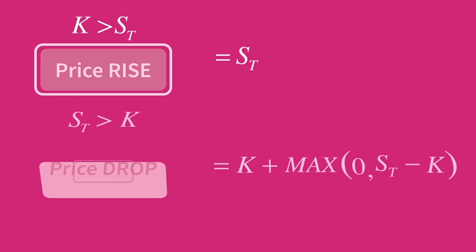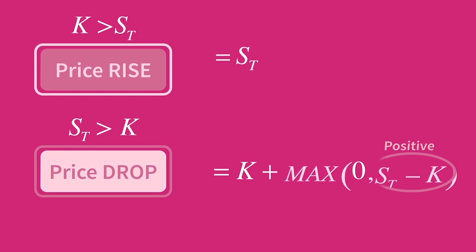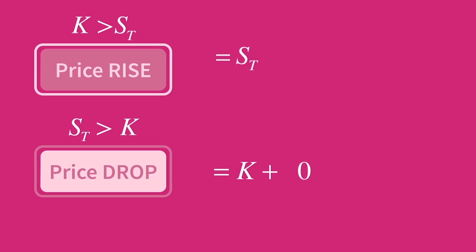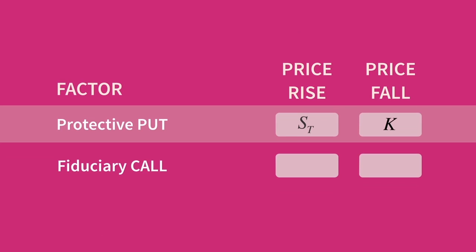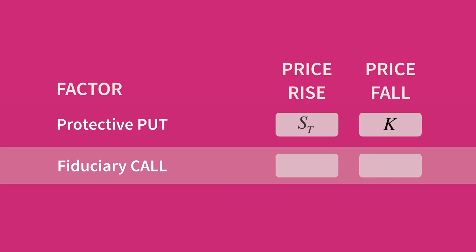If the price of the underlying falls, the call option will expire worthless, and so the payoff of the fiduciary call portfolio in that case will be just K. We have now shown that a protective put and a fiduciary call — two separate portfolios with two completely different components — have exactly the same payoff structure.